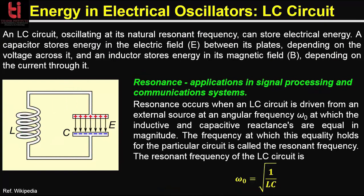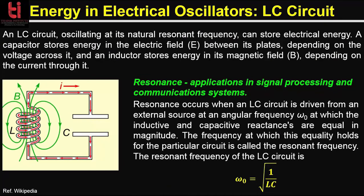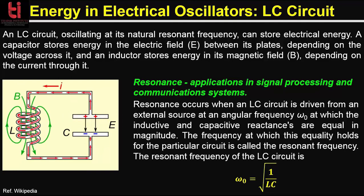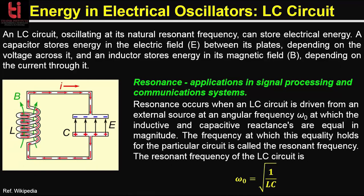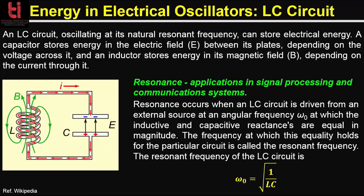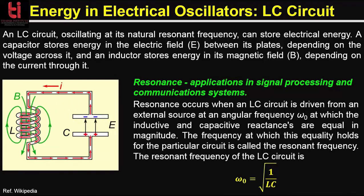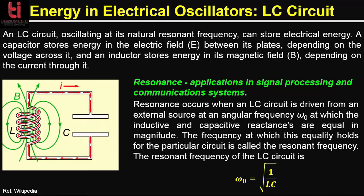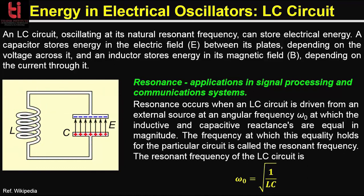So an LC circuit oscillating at its natural resonant frequency can store electrical energy. You can see this animation: a capacitor stores energy in the electric field between its plates depending on the voltage across it, and an inductor stores energy in its magnetic field depending on the current through it. If an inductor is connected across a charged capacitor, the voltage across the capacitor will drive a current through the inductor, building up a magnetic field around it.